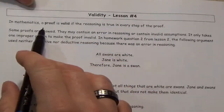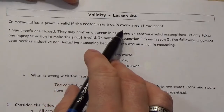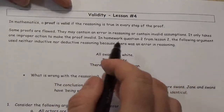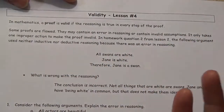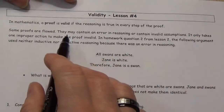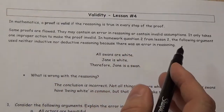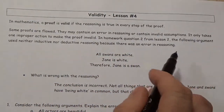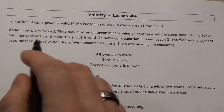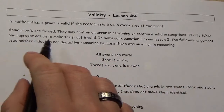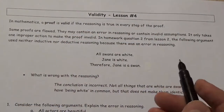In mathematics, a proof is valid if the reasoning is true in every step of the proof. Some proofs are flawed — no surprise there. They may contain an error in reasoning or contain invalid assumptions, and it only takes one improper action to make the proof invalid.